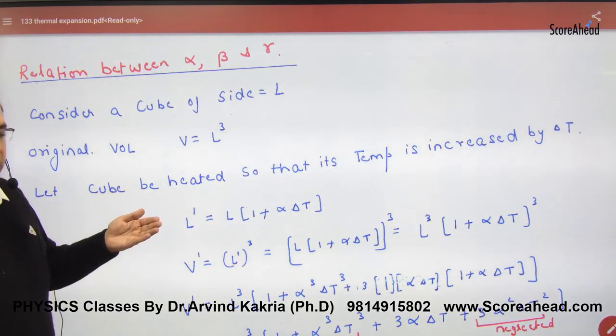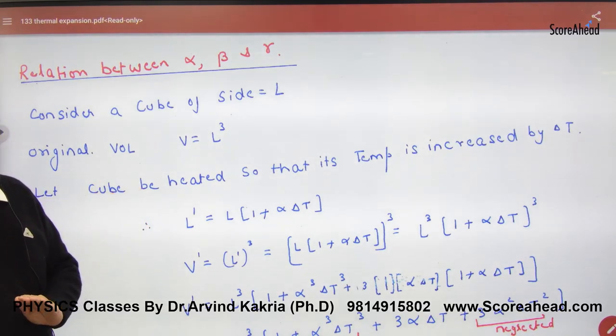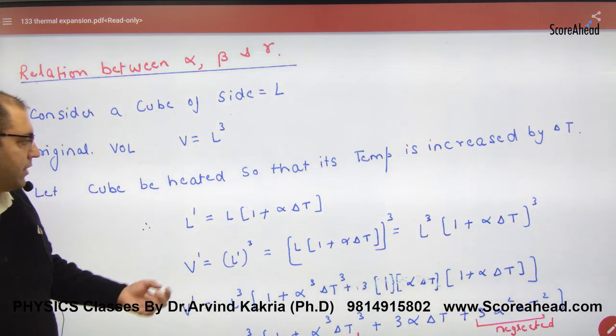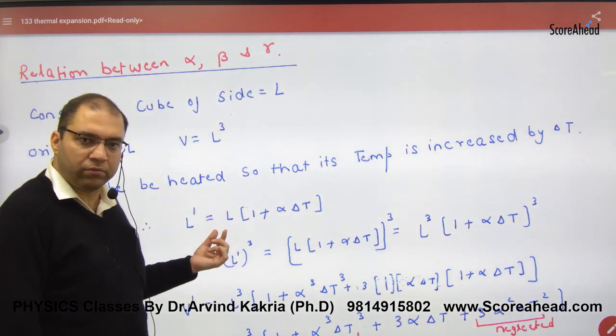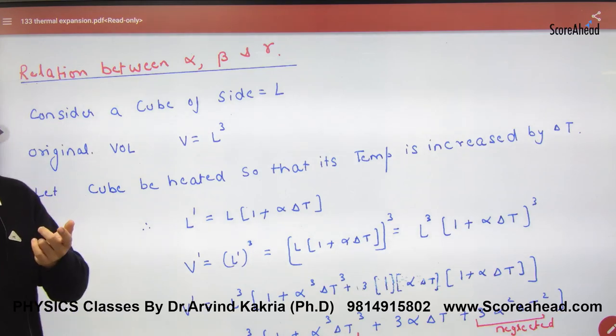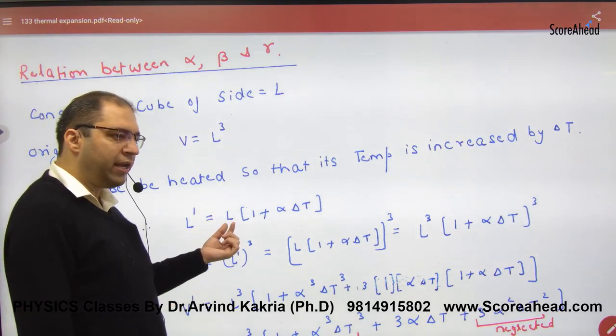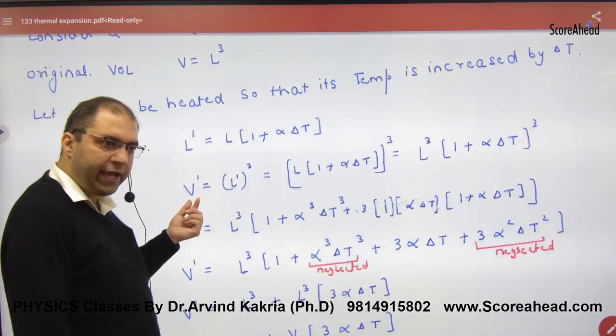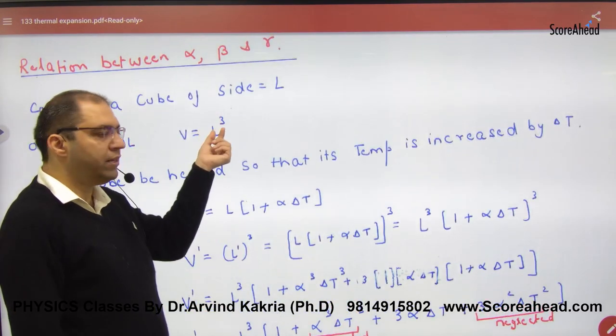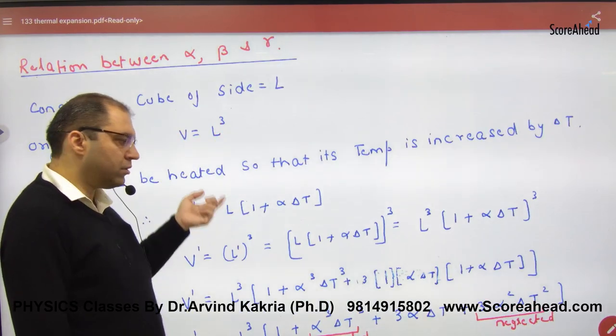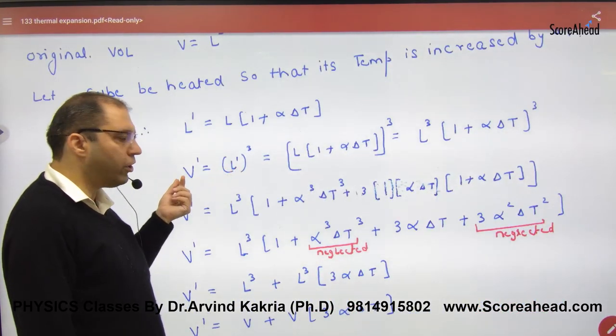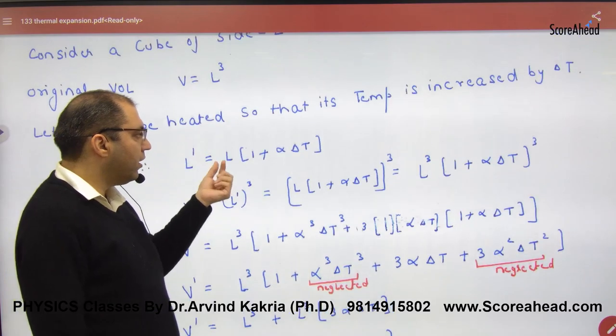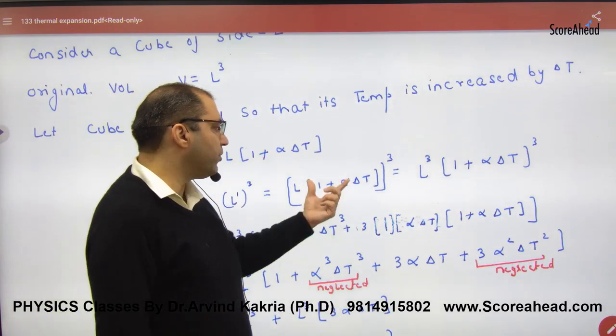Then, increase the temperature of the cube by delta T. So the length will increase. What's the length? L dash. L dash is L into 1 plus alpha into delta T. What will happen? V dash, L dash cube. When L was L, it was such a volume. When L dash is L, it is such a volume. What is L dash? L into 1 plus alpha into delta T cube.